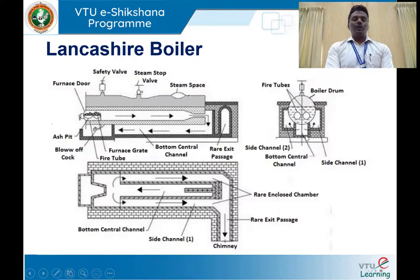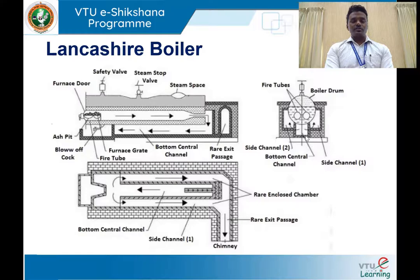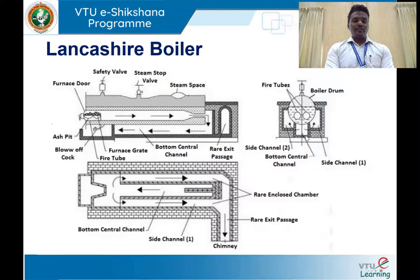Coming to the working principle of the Lancashire boiler — using this boiler, we can generate steam at low pressure, up to 20 bar. When fuel is burned inside the furnace — coal is used as fuel in the Lancashire boiler — it releases hot gases. Those hot gases are made to flow through the flue tubes. In order to prevent entry of dust particles or combustion particles inside the flue tubes, there is a bridge provided at one end of the flue tube.